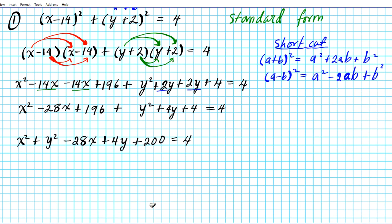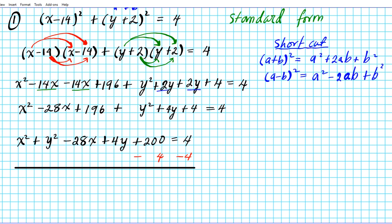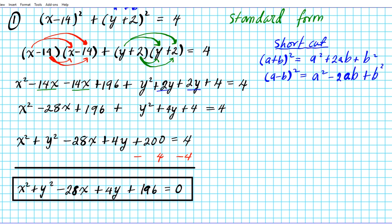Is this the general form yet? The answer is no — the general form must be equal to zero, and we still have a 4 on the right side. So we subtract 4 from both sides. This gives us X squared plus Y squared minus 28X plus 4Y plus 196 equals 0. This is the general form of the equation of the circle that was originally presented in standard form.